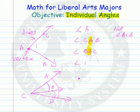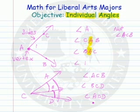If we want the one right here, we would call it angle ACB. If we want the one right here, we would call it angle BCD. If we wanted the big one, we would call it angle ACD.